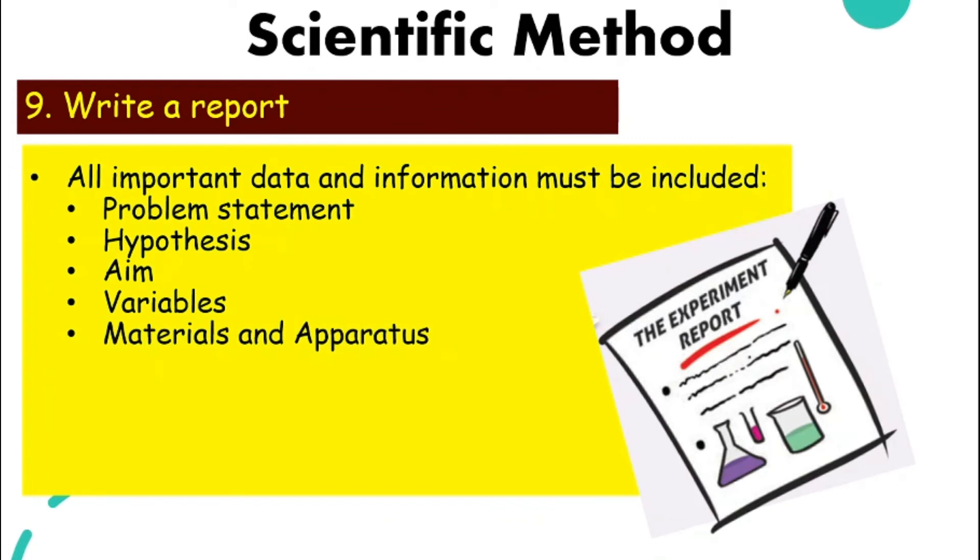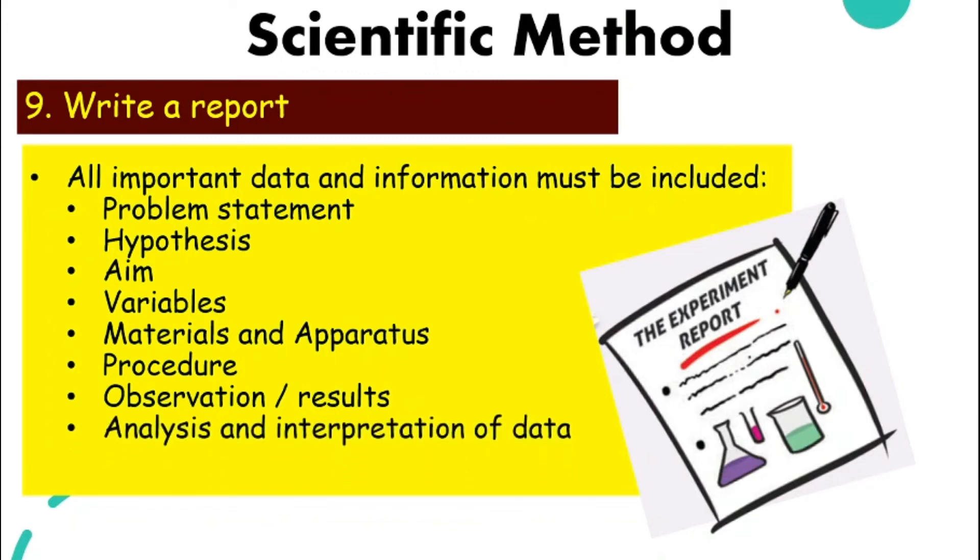Materials and apparatus that we use in the experiment. The procedure, how we carry out the experiment. Observation and results, where we write down what we see or what we have observed. Normally we can put them in table form if it includes measurement. Analysis and interpretation of data - normally we can present them as a graph or a chart. And then we need to write our conclusion, whether our hypothesis is accepted or rejected.